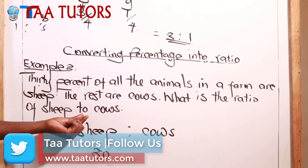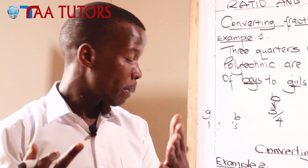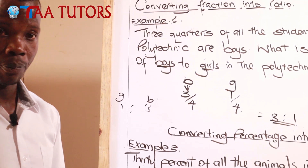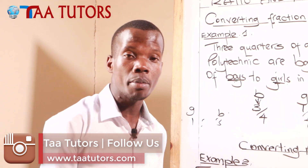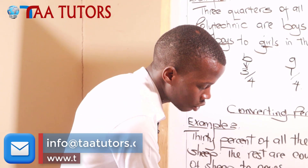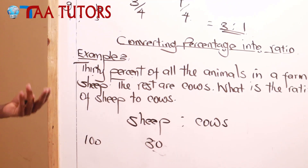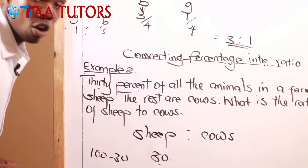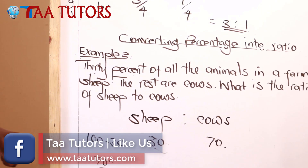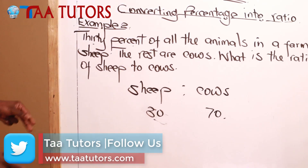We are not told the percentage of cows, but we can get it. The total percentage of all animals in the farm is 100 percent. So the percentage of cows is 100 minus 30, which gives us 70 percent. The percentage of cows is 70.